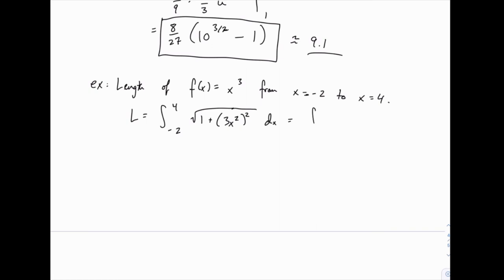If we want to simplify a little bit, we could write that as the square root of 1 plus 9x to the 4th. But the square root of 1 plus 9x to the 4th is not one that we know how to do using u substitution or integration by parts. So it doesn't fit any pattern that we know. So we're kind of stuck when it comes to doing this integral by hand.